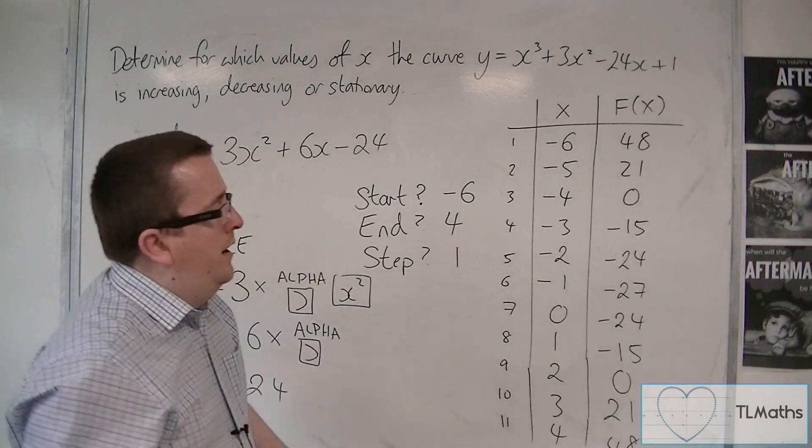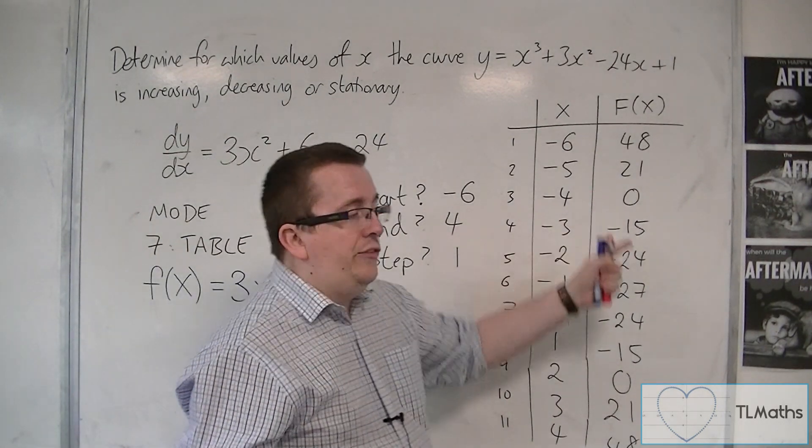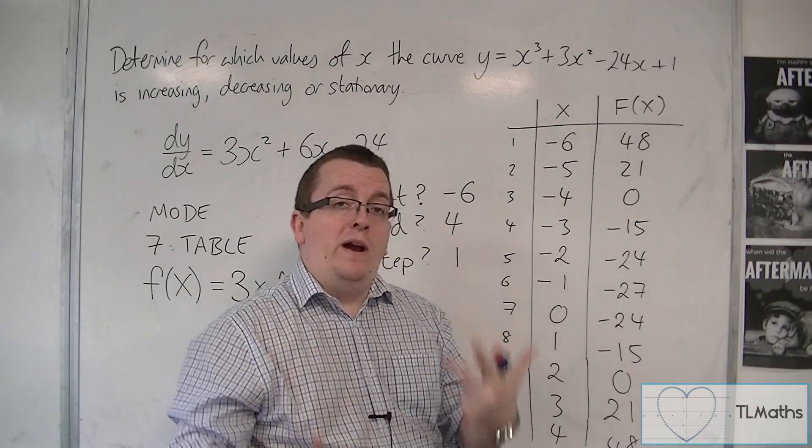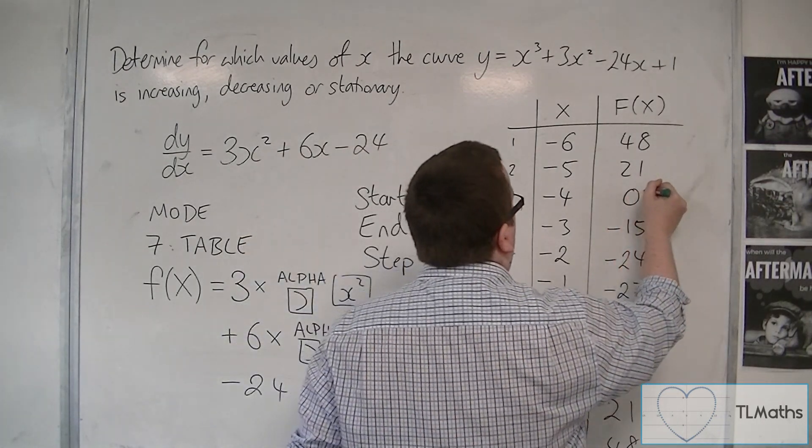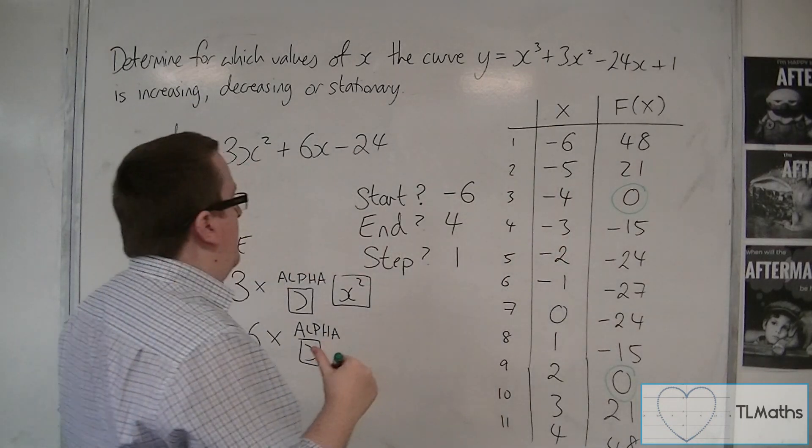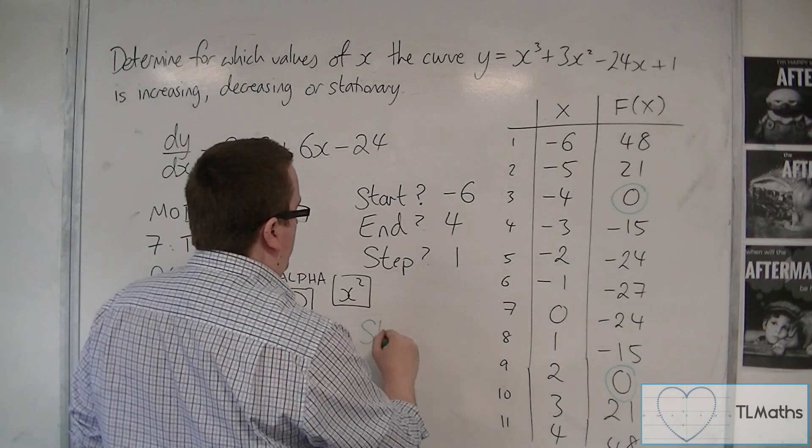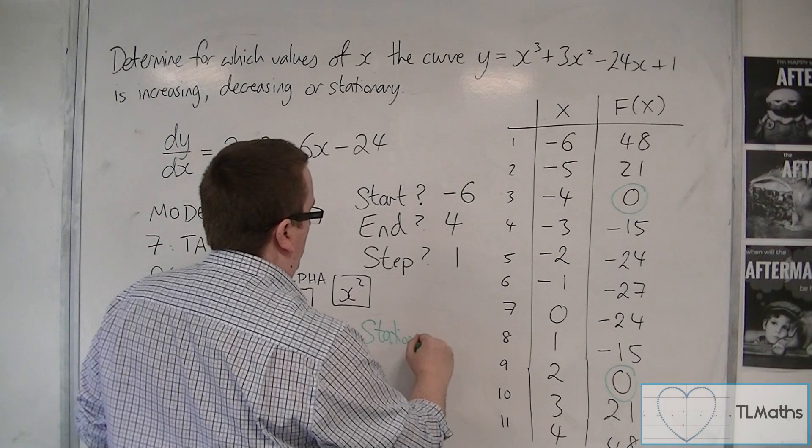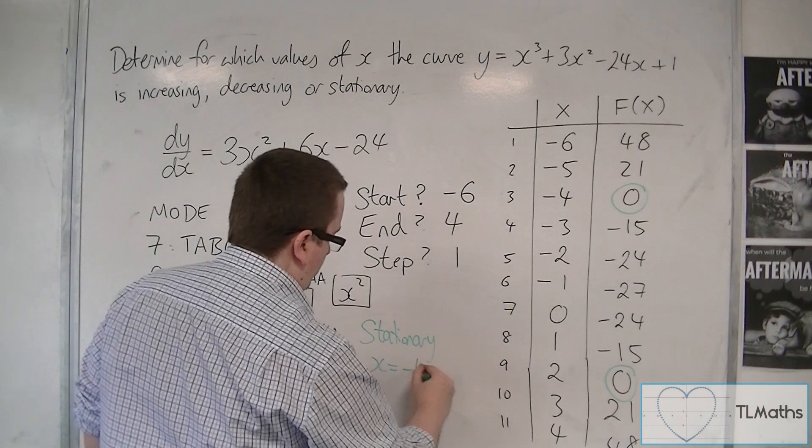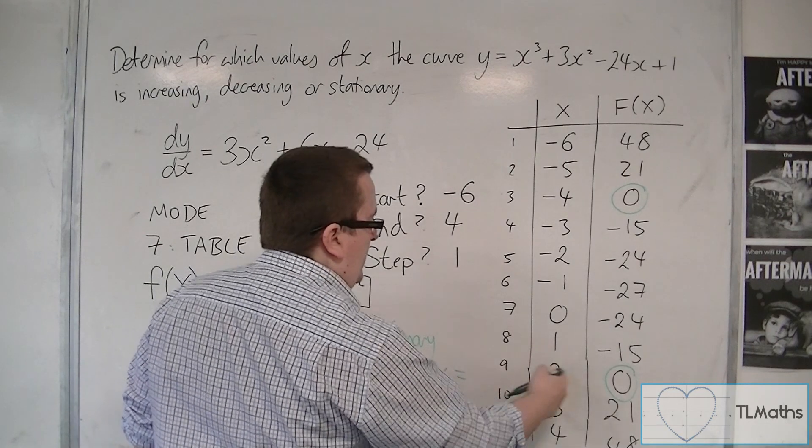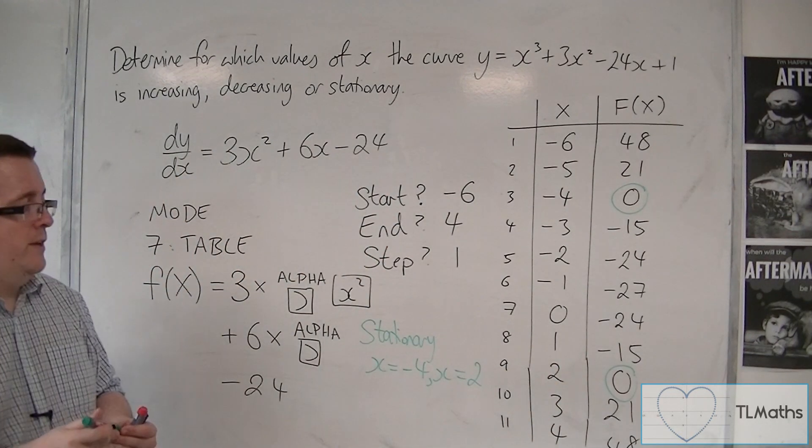Because any of the points where I'm getting 0, that's telling me where dy/dx is 0. And so that tells me the stationary points. So I know that this curve is stationary when x equals minus 4 and when x is equal to 2.